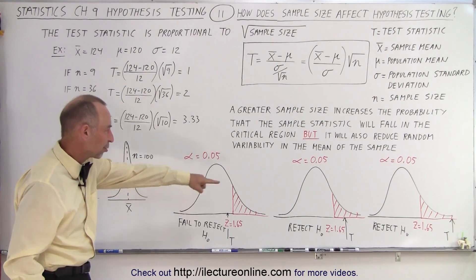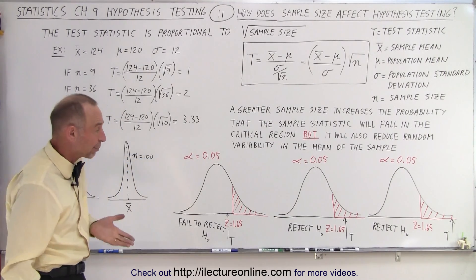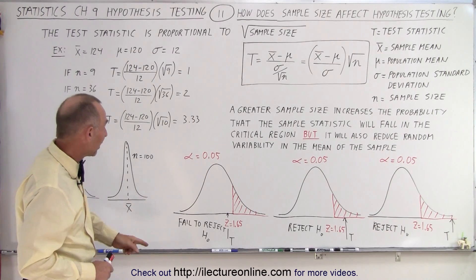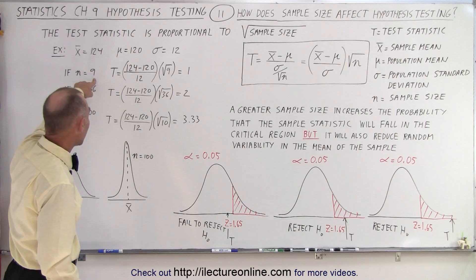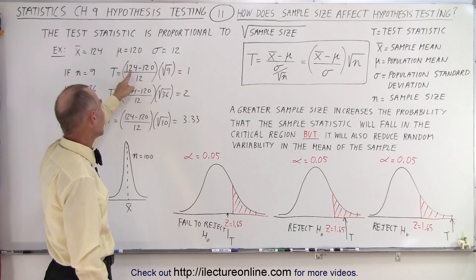So notice that we have three graphs right here. They all have a level of significance of .05 which is 5% so we haven't changed the level of significance. But notice that if the number of the sample size is equal to 9, then we take the square root of 9 and we multiply the times the difference between the mean of the sample and the mean of the population.